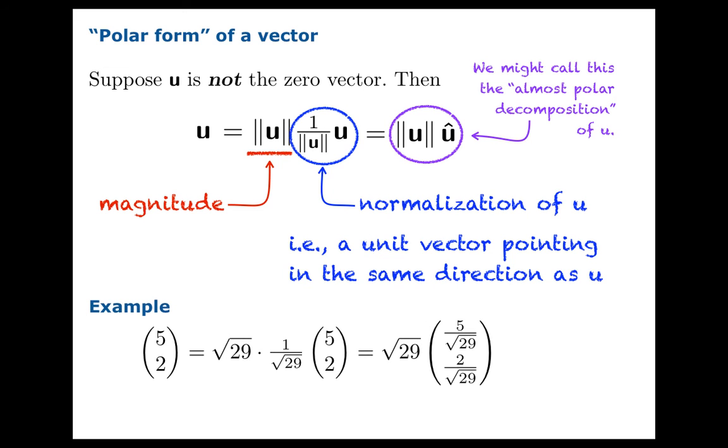Let's look at an example. If we have the vector 5, 2, this is our vector u. The norm is easily calculated to be square root of 29. So we could rewrite u as square root of 29 times this vector, which is the normalization of u. That's our almost polar composition.